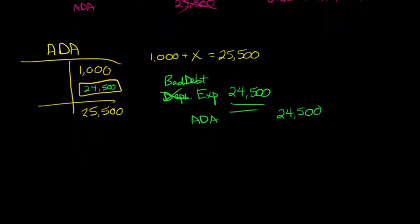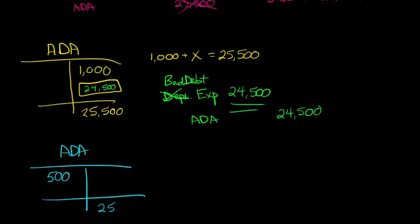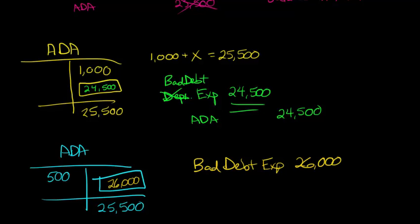Now, it works similarly if we have a debit balance to begin with in that ADA account. So let's say we have ADA, and we start with a debit balance of 500, but we still know now we need to get to 25,500. Okay? We have to say, okay, what credit needs to be made that will account for the fact we already have a debit balance here? And you can see that it's going to need to be 26,000. So what's that mean? Well, our bad debt expense is going to be debited for 26,000, and then we're going to credit that allowance for doubtful accounts for 26,000.